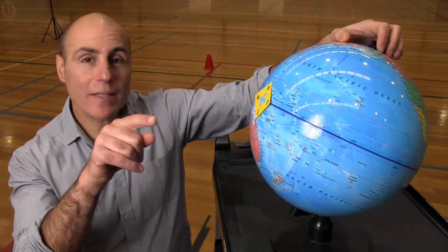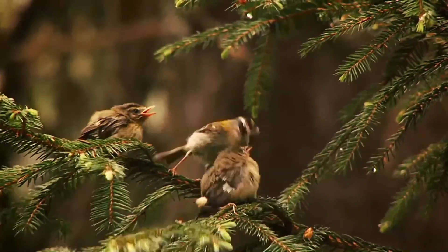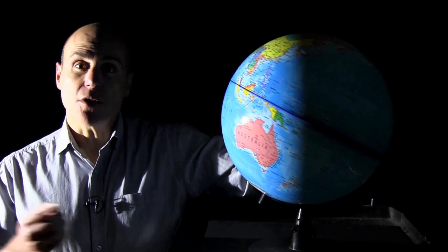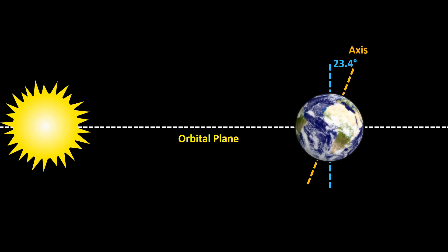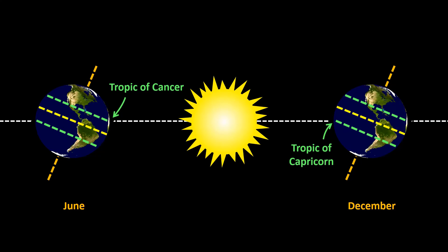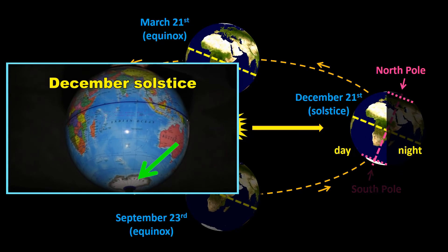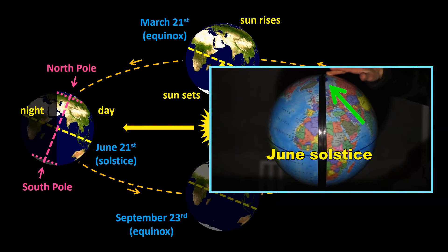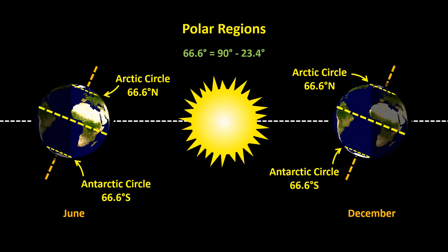We begin Episode 1, Seasons, with a brief explanation of how the seasons affect life on our precious planet, and then explain what causes night and day and what a year is. We then explain what causes seasons, why it's always hot near the equator and always cold near the poles, and why the poles get only one day a year. Yes, that's right — the poles get only one day a year: a six-month-long day followed by a six-month-long night.